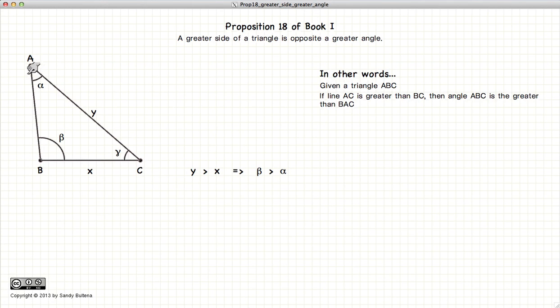It states that if you have a triangle ABC with one length of the triangle X, the other length Y, where Y is larger than X.